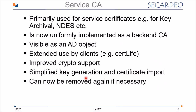The service CA is a built-in CA used for needed service certificates, such as for key archival. It is now implemented consistently like all other back-end CAs — visible as an Active Directory enrollment object and easily usable by standard clients, CertUtil, and CertLive. We have improved crypto support, and there is now easier handling for creating and configuring the service CA. It can also now be removed easily if no longer needed.